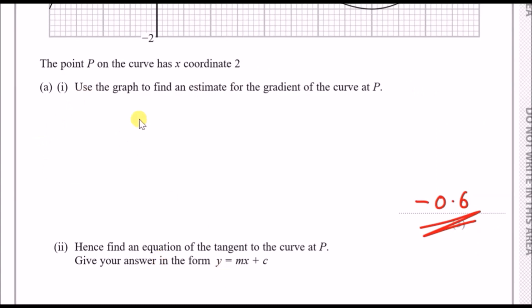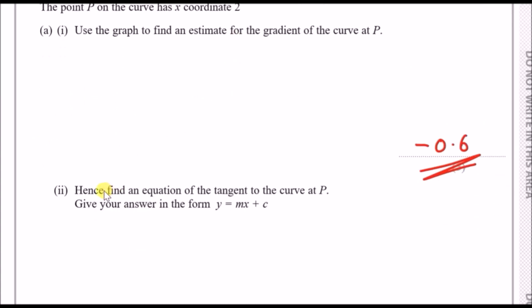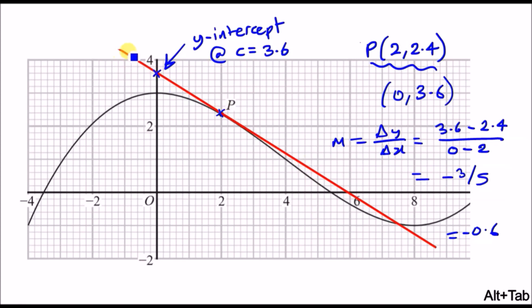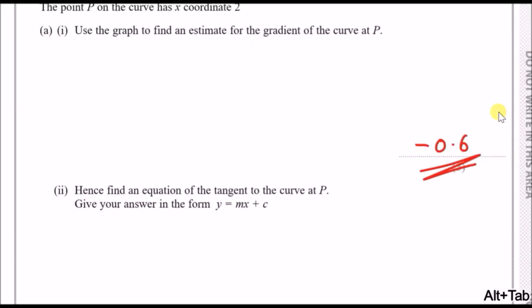The gradient is literally the change in y over change in x. m equals change in y over change in x, which is the difference between the corners. The change in y is 3.6 minus 2.4 over 0 take away 2. If you put this in a calculator carefully, you should get an answer of minus 3 over 5 or minus 0.6. The second part says hence, find an equation of the tangent to the curve at P in the form y equals mx plus c. The tangent is literally the equation of this straight line. We know m is minus 0.6 and c is 3.6. So the equation is simply y equals minus 0.6x plus 3.6.